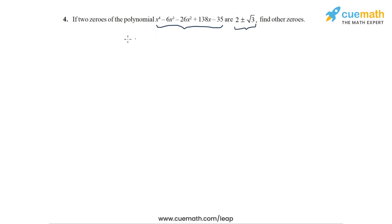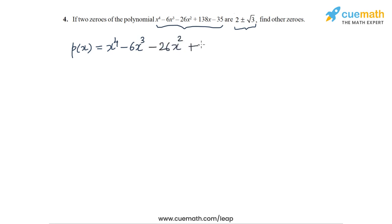Let's call this fourth degree polynomial P(x). So P(x) is x to the 4 minus 6x cubed minus 26x squared plus 138x minus 35. Now two of the zeros of P(x) are given: 2 plus or minus root 3.